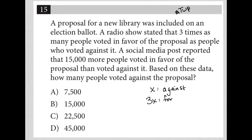The next sentence says a social media post reported that 15,000 more people voted in favor of the proposal than voted against it. So that's saying against was x and for was x plus 15,000. We now have two different ways of thinking about this, which is interesting.